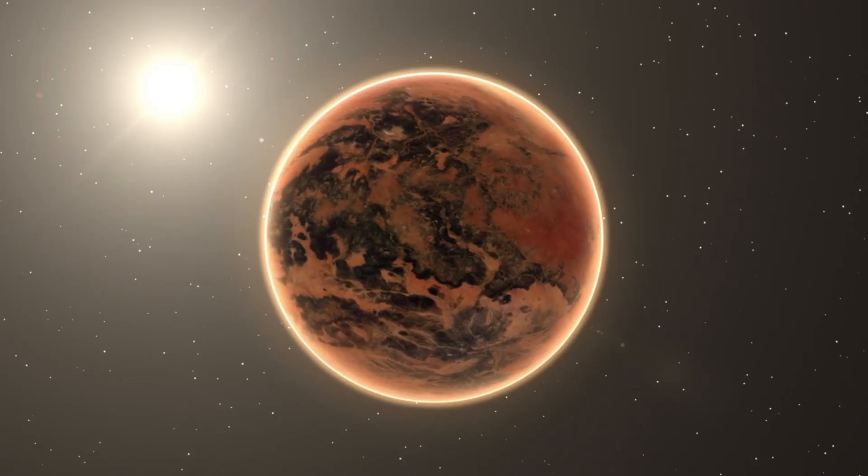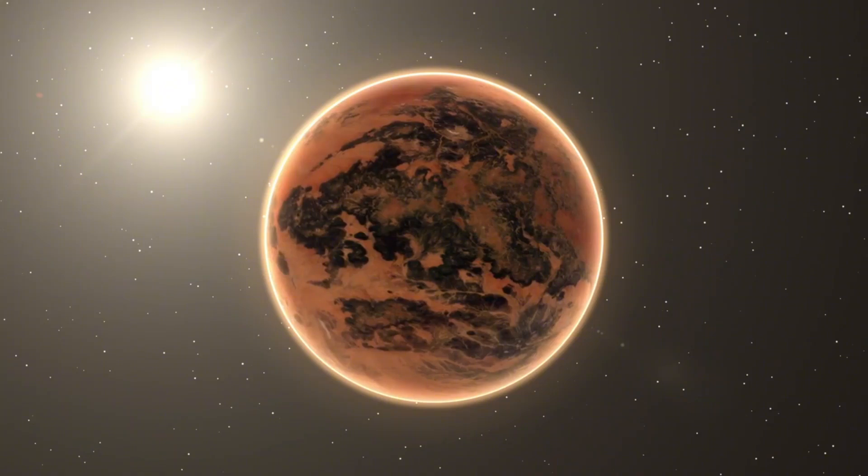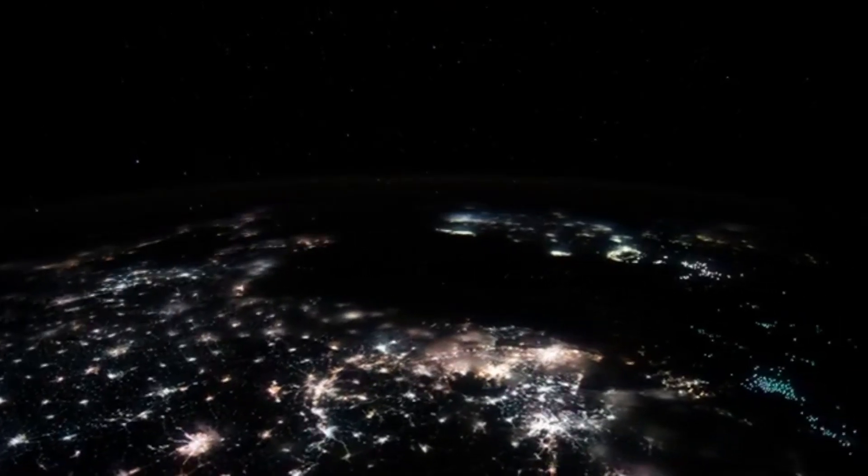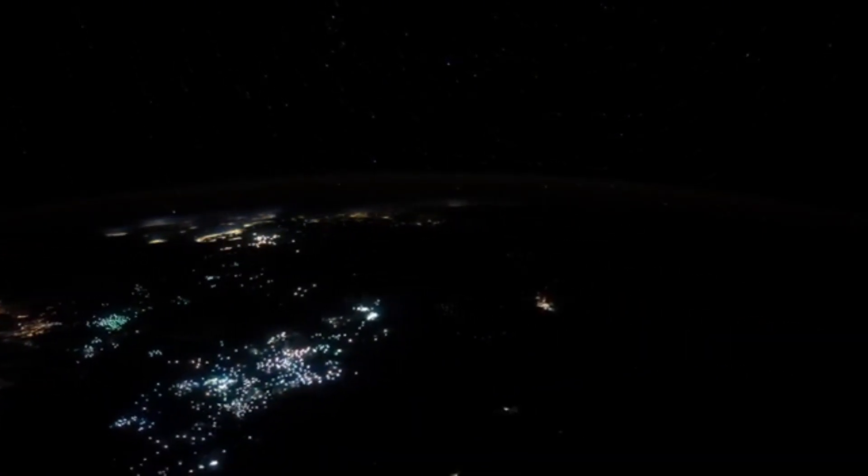But wait, there's more. Proxima b isn't alone in its orbit around the red dwarf star. It has a lone companion, Proxima Centauri c, which may reveal even more secrets the star system holds. Perhaps there's another companion that we have yet to discover.